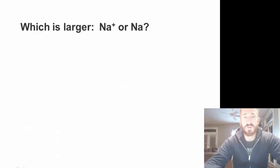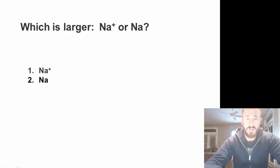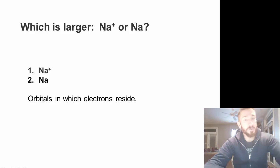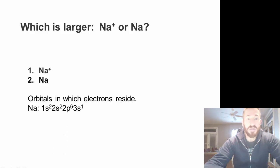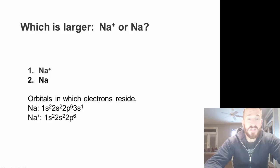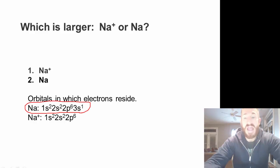Finally, let's determine which is larger: the sodium ion (plus one) or neutral sodium. We look at the orbitals in which electrons reside. Sodium is 1s2, 2s2, 2p6, 3s1, but the sodium ion has lost that 3s1. The fact that neutral sodium has a 3s1 orbital — which is further from the nucleus — means neutral sodium is going to be the larger atom.